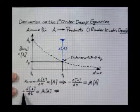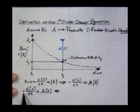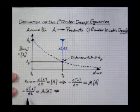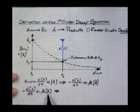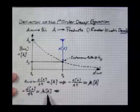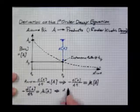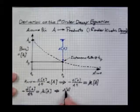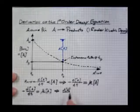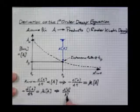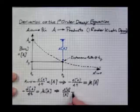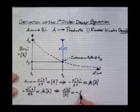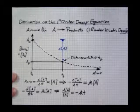So we will divide both sides by a minus, multiply both sides by a DT, and divide both sides by the concentration of A, giving us a DA over concentration of A, wherever it might be, and that's equal to a minus K times T.